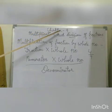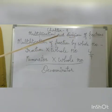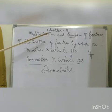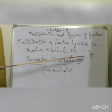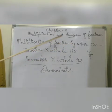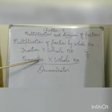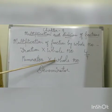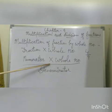Hello students, today we are going to start with chapter number 9, which is multiplication and division of fractions. So, multiplication of fraction by whole number. You all know what a fraction is — it has a numerator and a denominator. How do we multiply a fraction by a whole number? You have to multiply the numerator with the whole number upon the denominator.